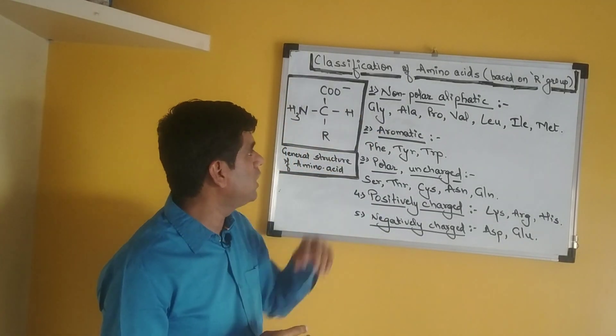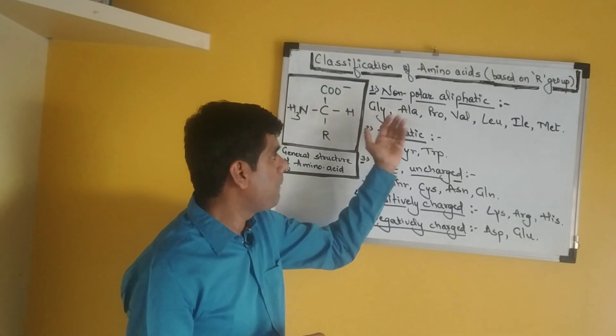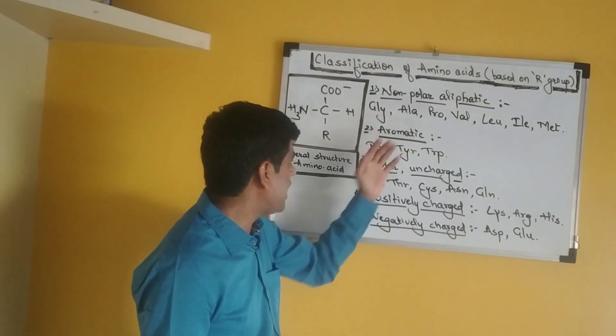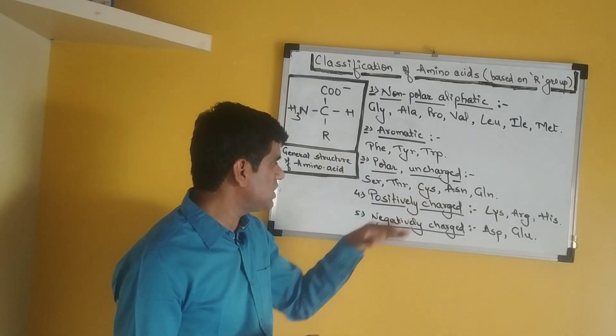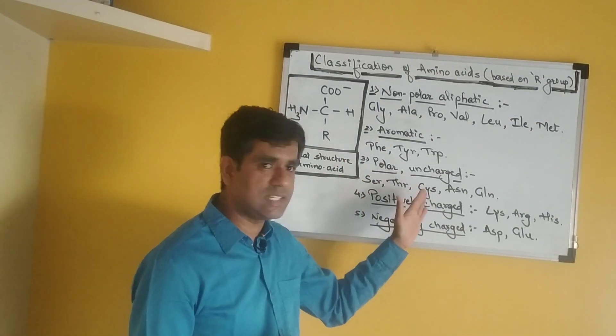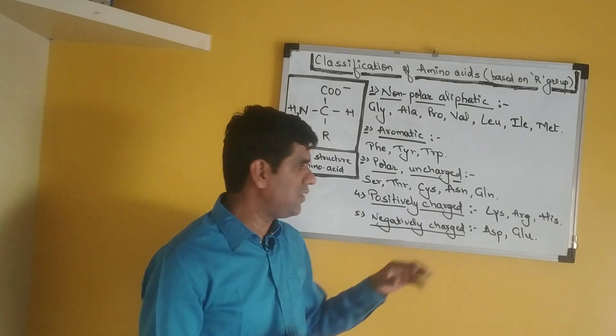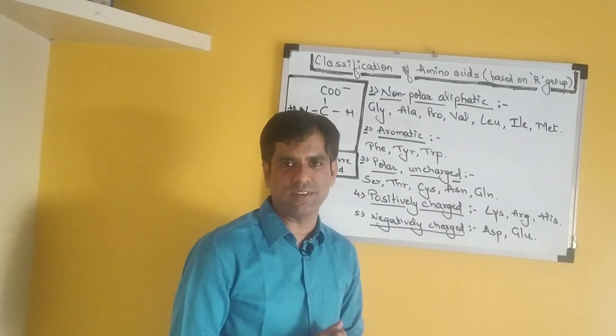In summary, the non-polar aliphatic group includes glycine, alanine, proline, valine, leucine, isoleucine, and methionine. The aromatic includes phenylalanine, tyrosine, and tryptophan. Polar but uncharged includes serine, threonine, cysteine, asparagine, and glutamine. Positively charged includes lysine, arginine, and histidine. And negatively charged includes aspartate and glutamate. Thank you.